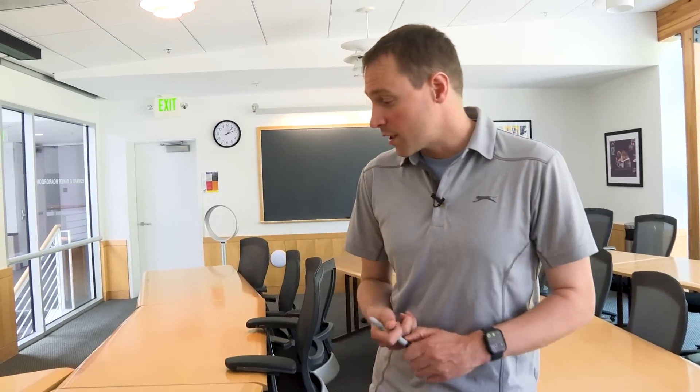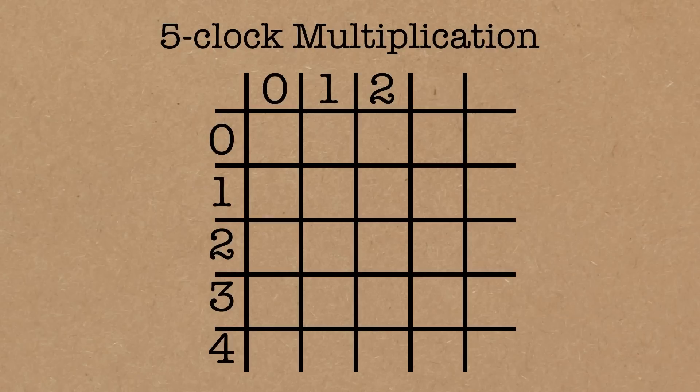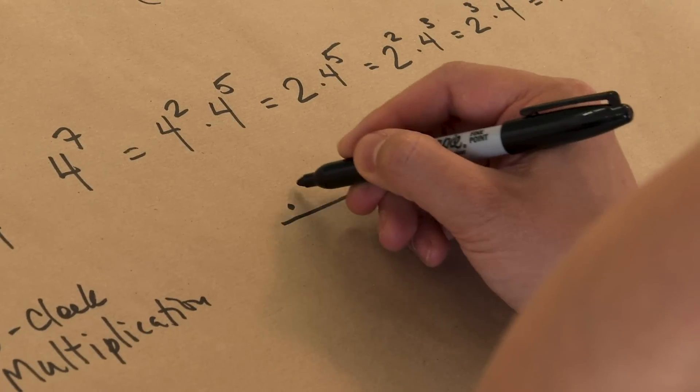So here we did 7, but maybe 7's a little big. Why don't we try the 5 clock? So let's pick p equals 5 instead and talk a little bit about what the multiplication table for 5 clock would look like. And I'm going to write it slightly different.